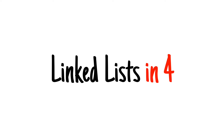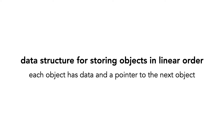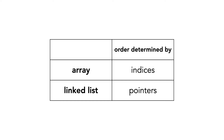Today I'm going to teach you about linked lists. A linked list is a data structure for storing objects in linear order. Objects in a linked list have data and a pointer to the next object in the list. Linked lists are similar to arrays, except the pointers determine ordering, not array indices.